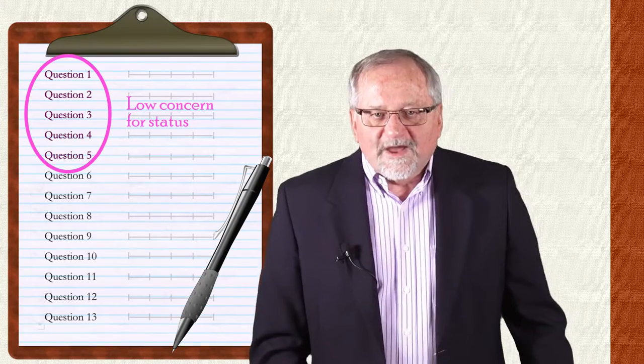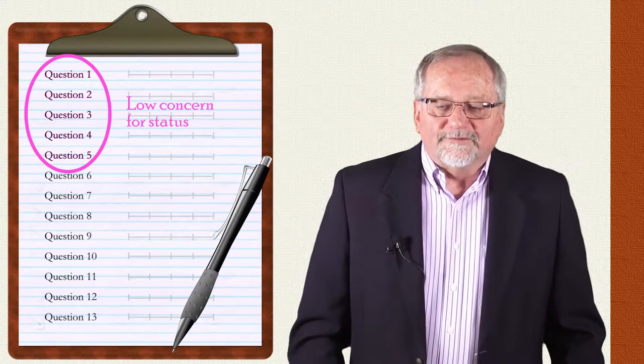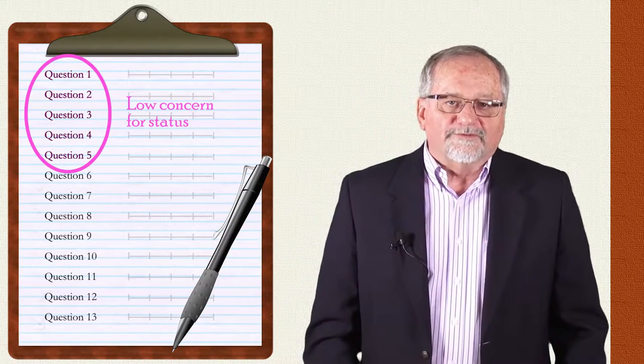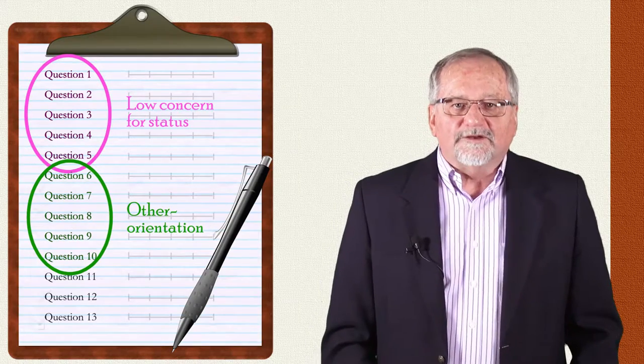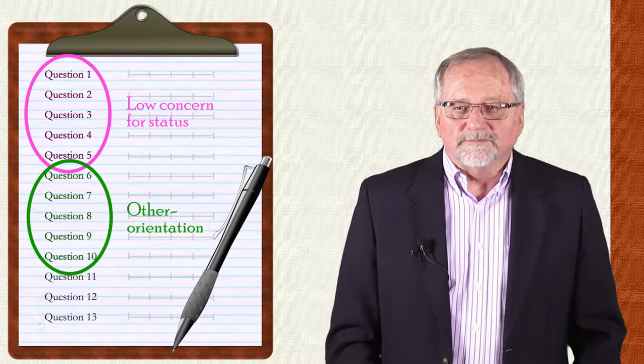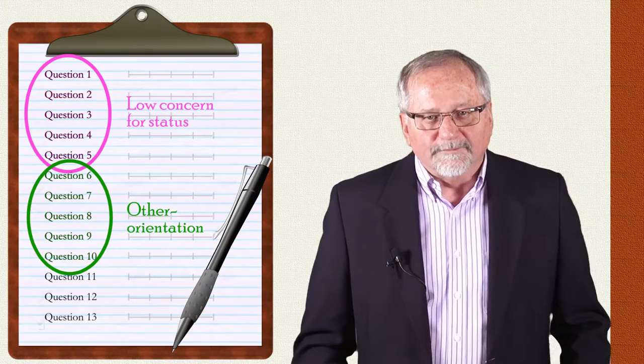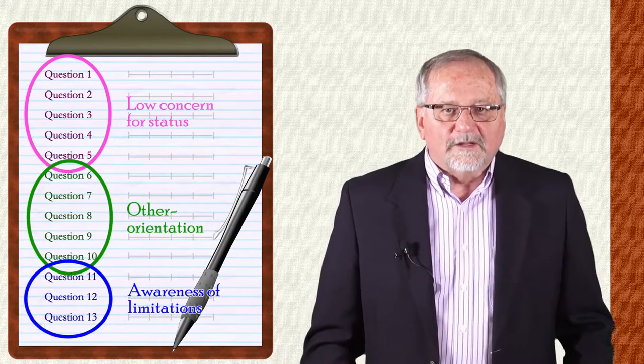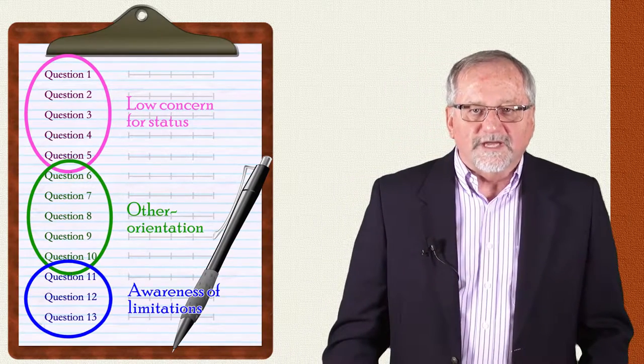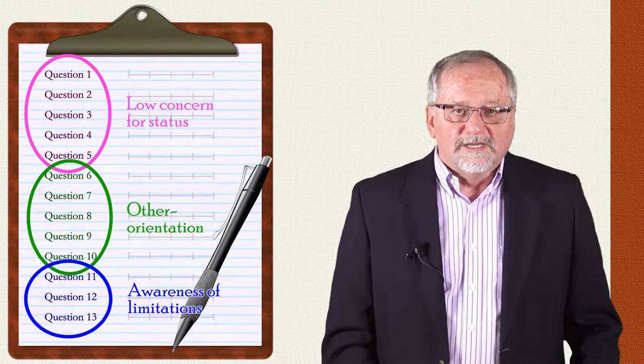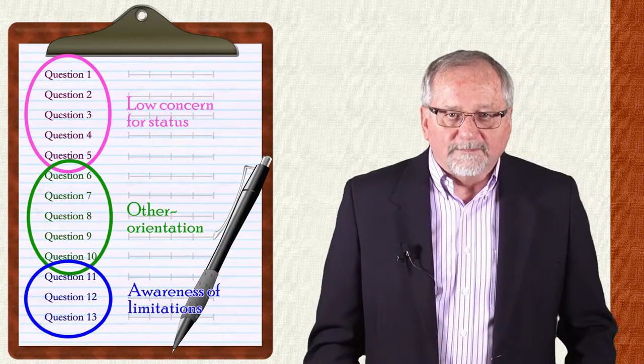The scale has three factors. The first factor is a low concern for status, five items make up that scale. The second factor is an other-orientation, also consisting of five items. And the third scale is an accurate assessment of self, or it could be an awareness of limitation that is comprised of three items.